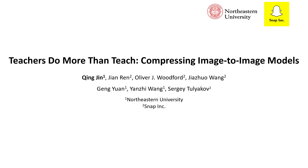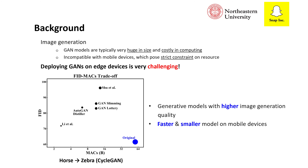We introduce a new technique to compress image-to-image models. This work is done by Qing Jin from Northeastern University during his internship at Snapchat. GAN models for image generation are typically very large and computationally intensive. They are incompatible with mobile devices, so deploying GANs on edge devices is very challenging.